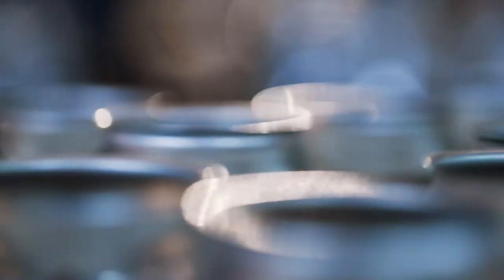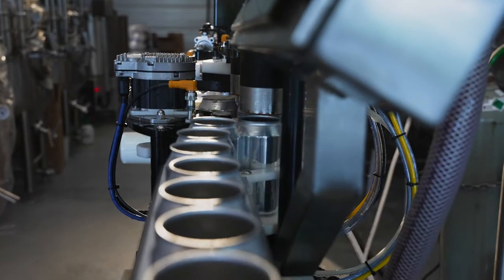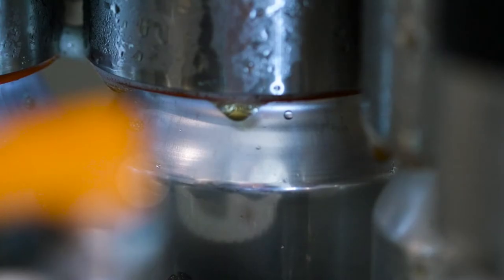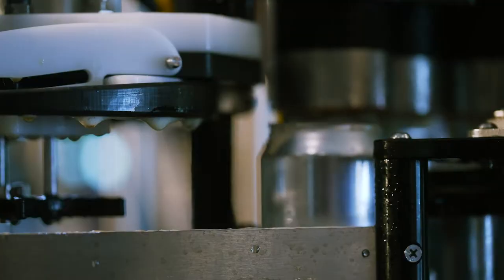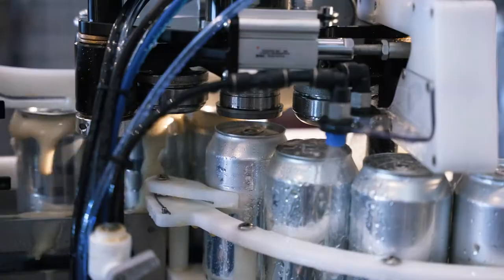So that means sleek, slim, or the standard 211 can diameter, in addition to all of the various heights that you would find for those can diameters. Any of the machines can be switched to a different diameter configuration or height configuration in less than 30 minutes.